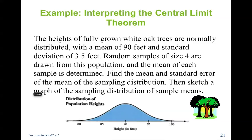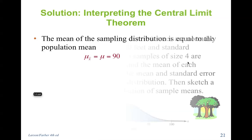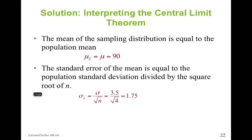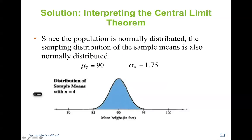The heights of fully grown white oak trees are normally distributed with a mean of 90 feet and standard deviation of 3.5. Random samples of size 4 are drawn and the mean of each sample is determined. Find the mean, standard error of the mean, and the sampling distribution, then sketch a graph. The mean equals 90 and stays 90. The standard deviation is divided by the square root of 4. Since the population is normally distributed, the sampling distribution of sample means is also normally distributed.